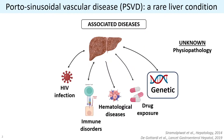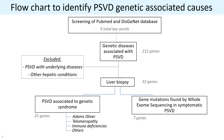The physiopathology of PSVD is unknown. PSVD has been associated with different systemic diseases, like HIV infection, immune and hematological disease, drug exposure, and genetic disease. In my presentation, I will focus on the genetic disease of PSVD and show you some data compilation that we have been working on.